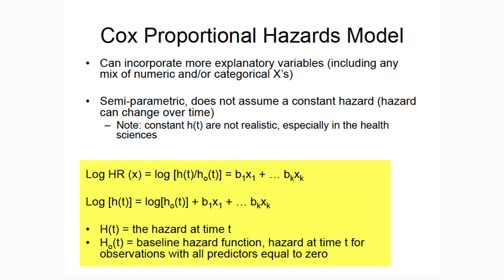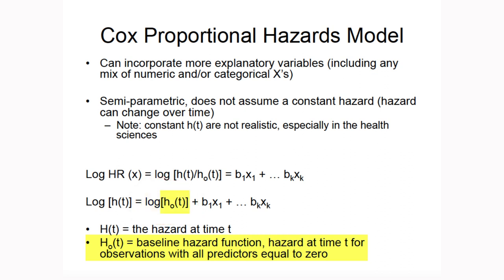Recall that the hazard means the probability that you die now, given that you're alive. It doesn't have much of a useful interpretation on its own, but relative hazards, or hazard ratios, do. In the Cox regression equation, in place of where the intercept is in linear regression, we have the log baseline hazard. The baseline hazard is the hazard at time t for observations when all predictors equal 0. An important property of the baseline hazard is that it's unspecified, because it's allowed to vary over time — so it doesn't have a fixed value and won't appear in your output.